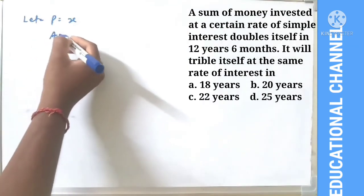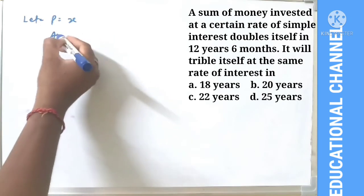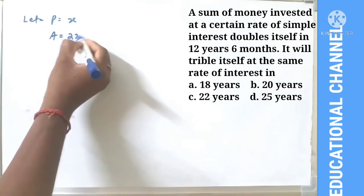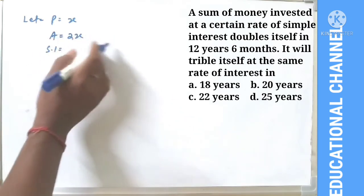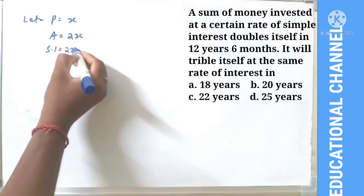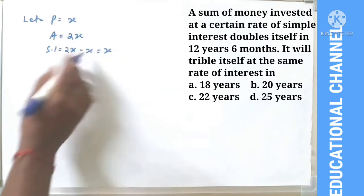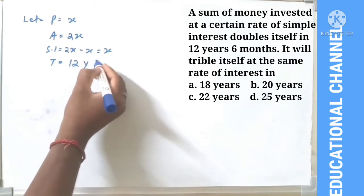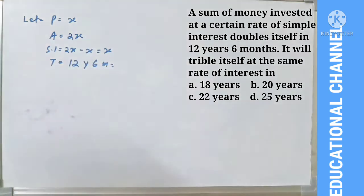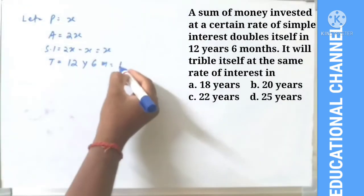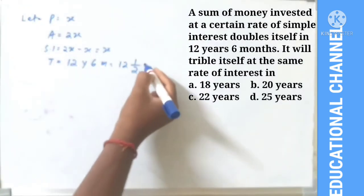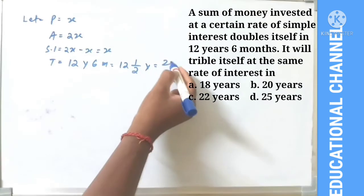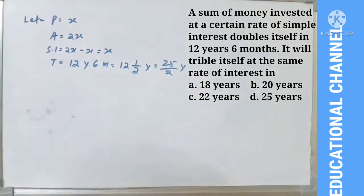Time T = 12 years 6 months, which equals 12 and 1/2 years, equal to 25/2 years.